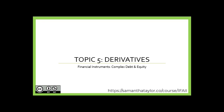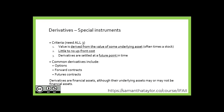Topic 5: Derivatives. Derivatives are a special type of financial instrument. Each derivative is a financial instrument, however their underlying assets may or may not be. In order to be classified as a derivative, this instrument needs to have all of the following criteria satisfied.